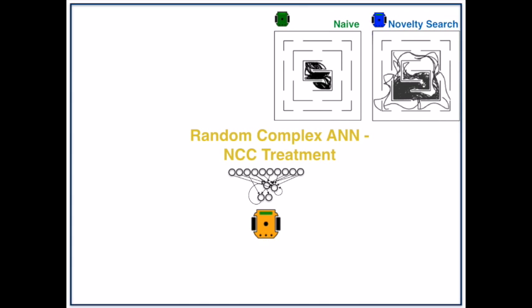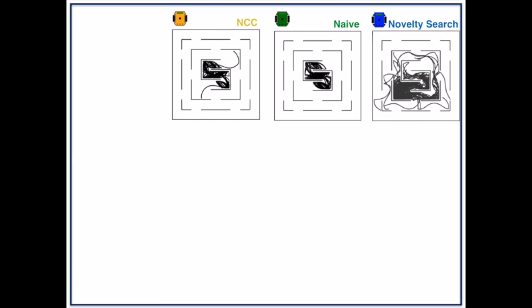The second control in yellow are robots controlled by random artificial neural networks that have the same number of connections and nodes as the novelty search robots. This is the network complexity control or NCC. The last control in red are robots that have evolved to solve the original maze with a traditional objective-based EA. This is the fitness control.